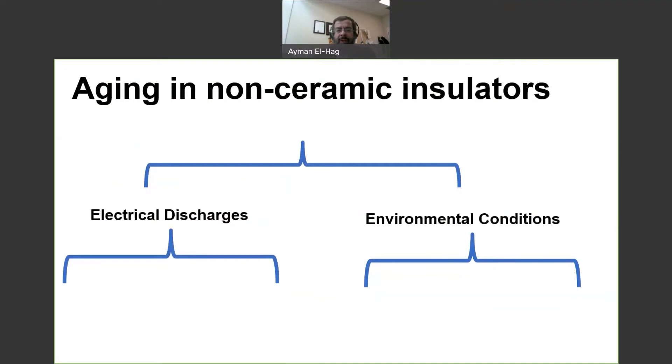Just to remind ourselves of this diagram that we mentioned before, we said that aging in non-ceramic insulators can be caused by electrical discharges or environmental conditions. So discharges like Corona, dryband arcing, and we spoke a little bit about dryband arcing.